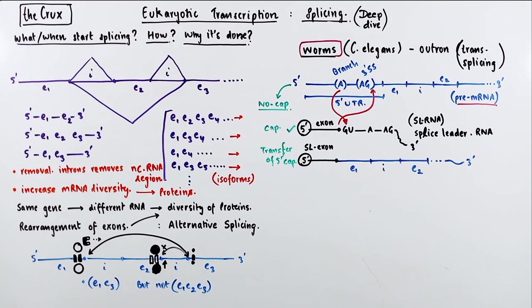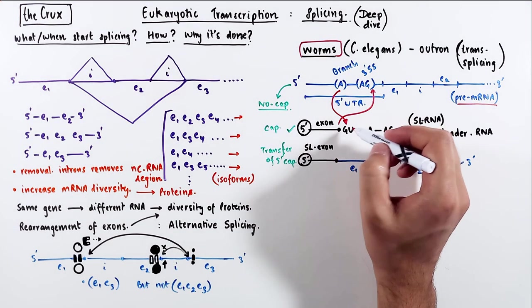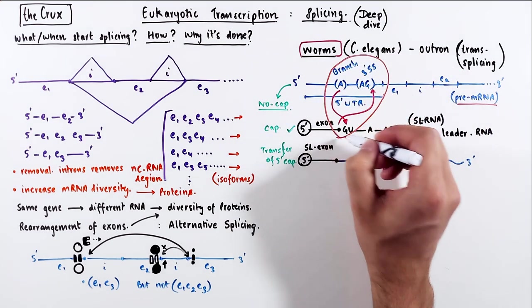So through this process of trans-splicing, you can transfer the exon, which contains the 5' cap, to the mRNA, which fixes the mRNA stability issues. So this process of trans-splicing cuts out the 5' UTR,